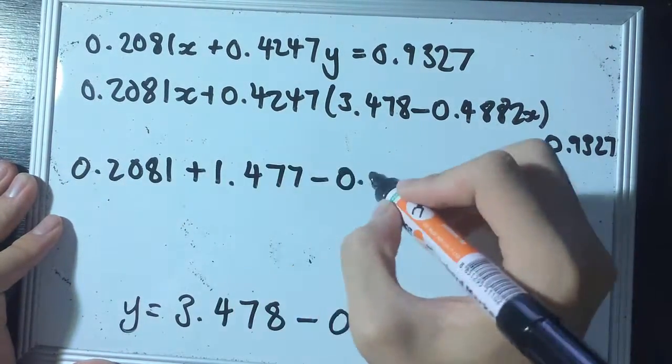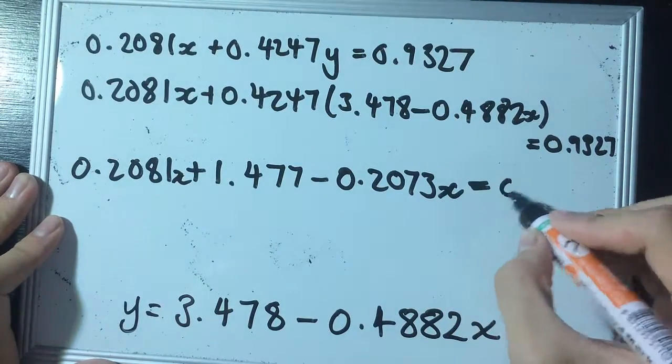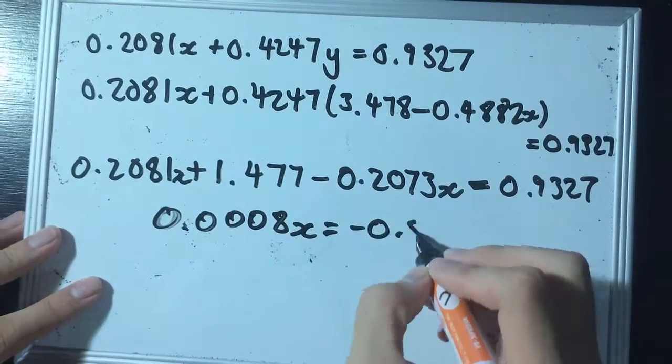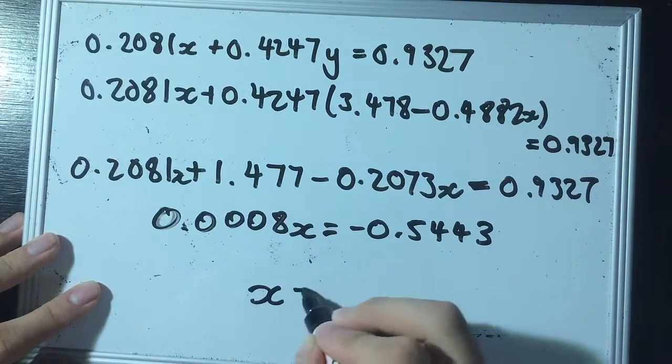And what we come out with as the value of x, when we use four significant figures instead, is that x will come out to equal to negative 680.4.